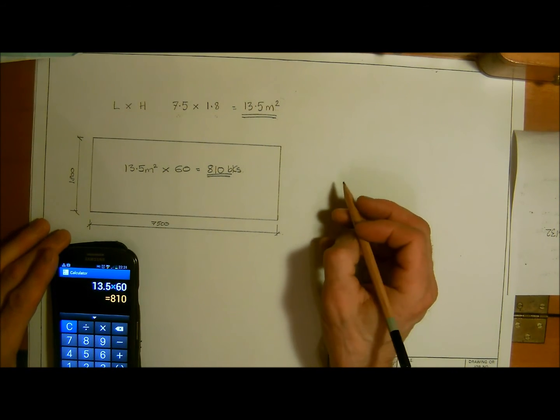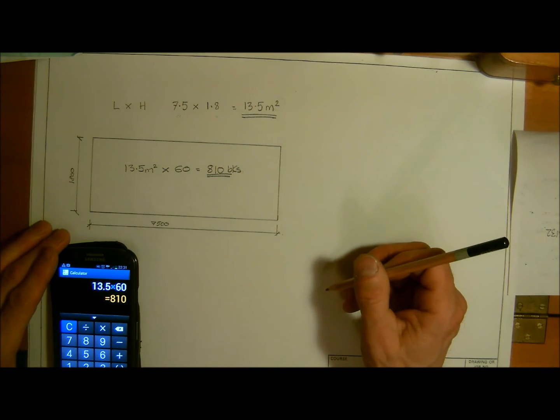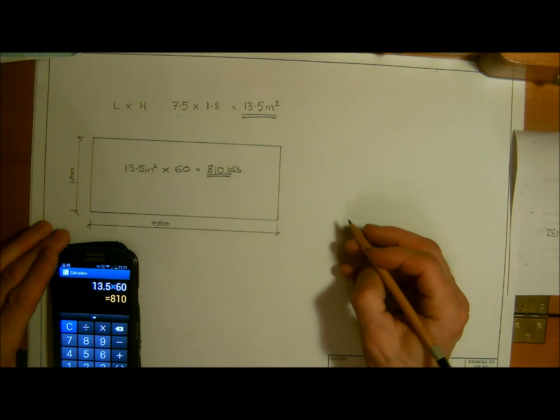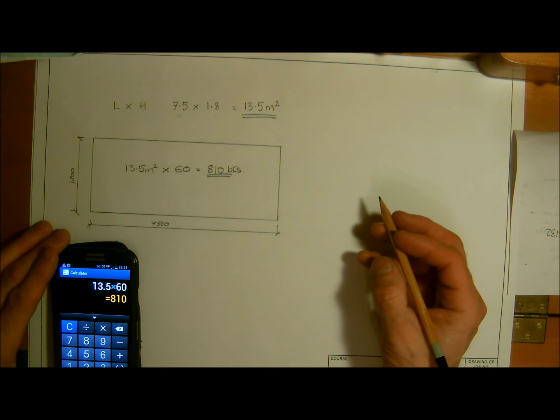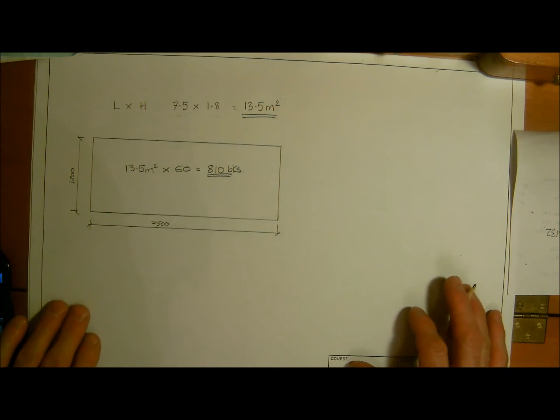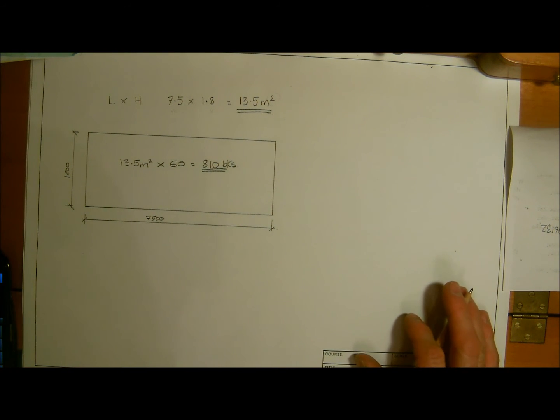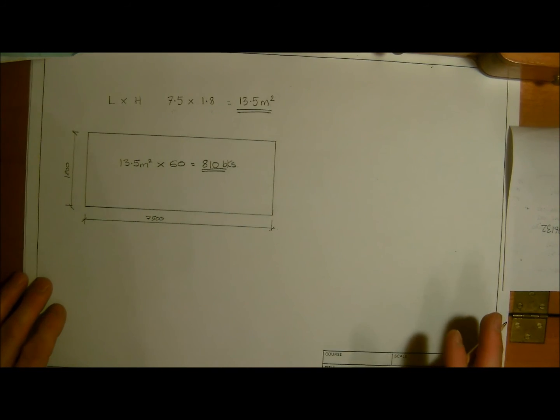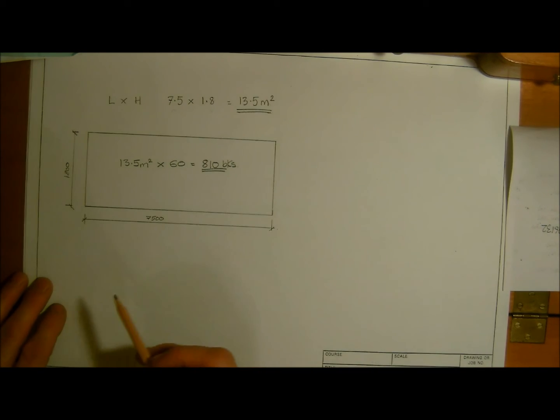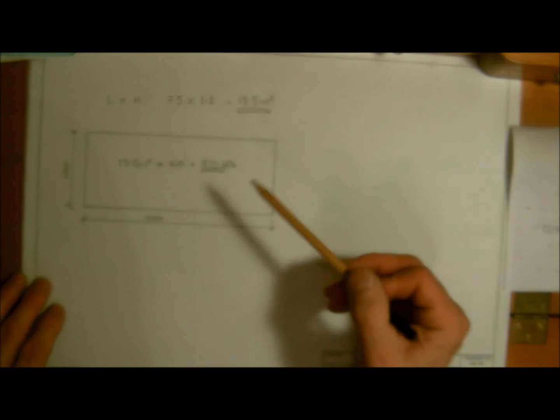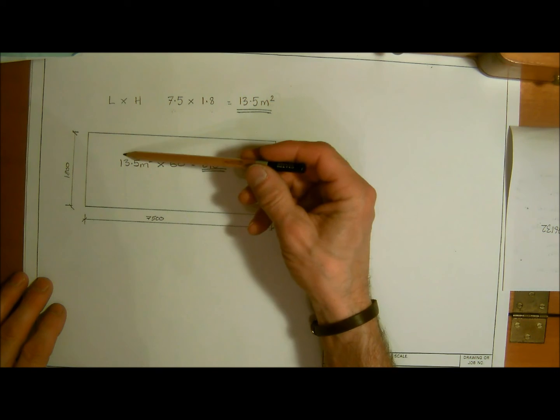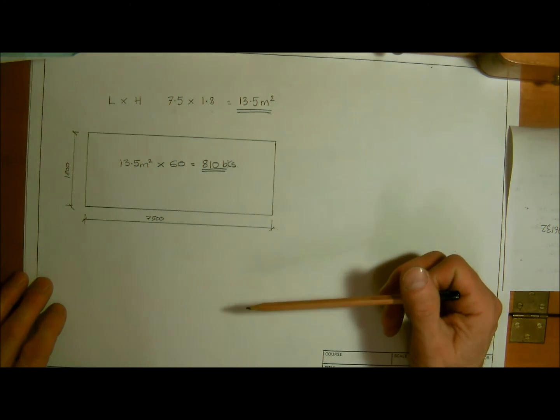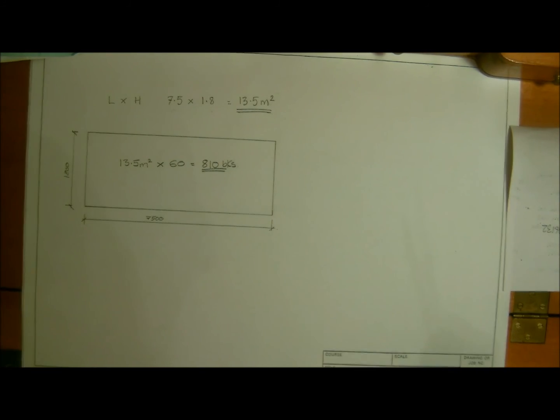Okay, so that's a simple way of working out the amount of bricks for a stretcher bond wall. If we were to go further into this, we will start working out percentages for wastage, but before we do that, we will have a look at adjustments such as doors and windows. In the next video, we're going to go through the same principles, but we're going to be looking at English bond.